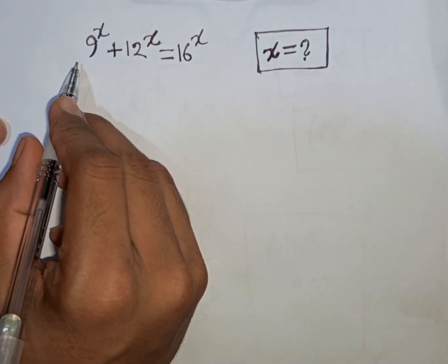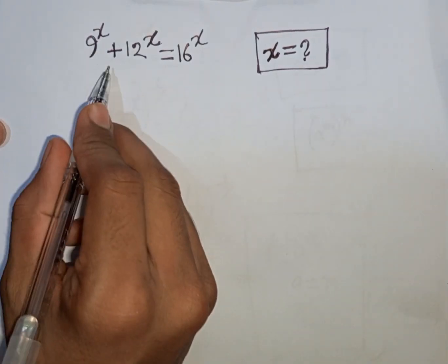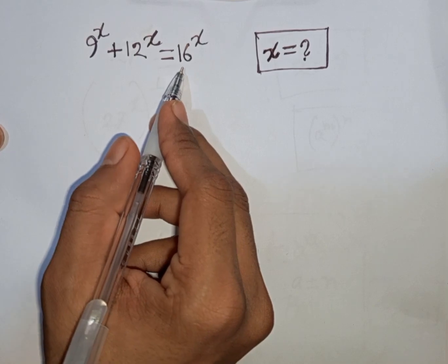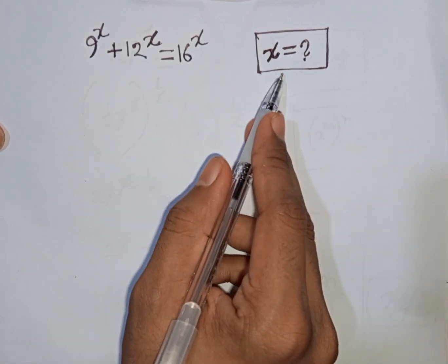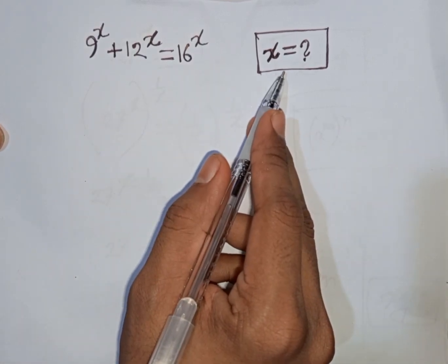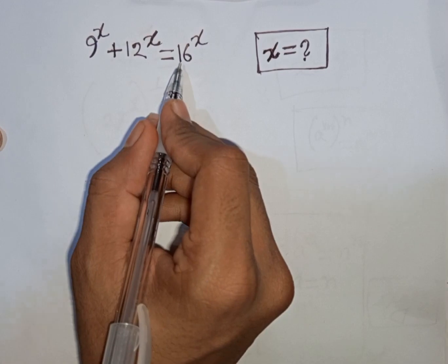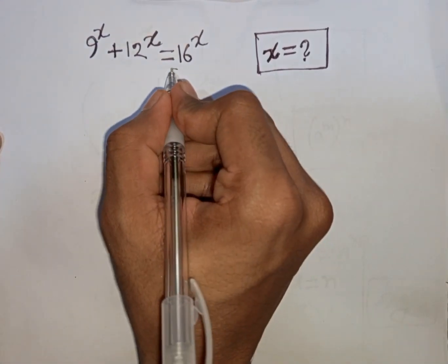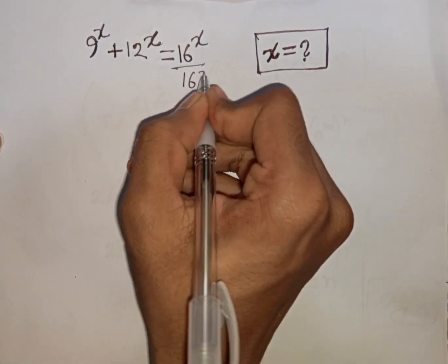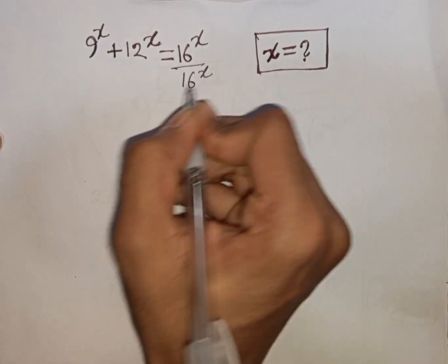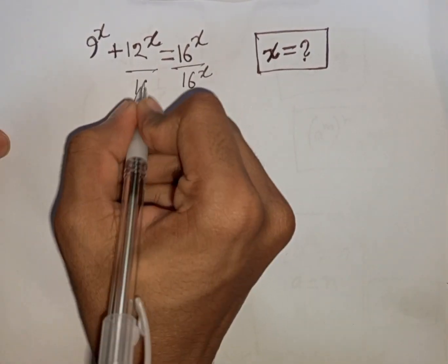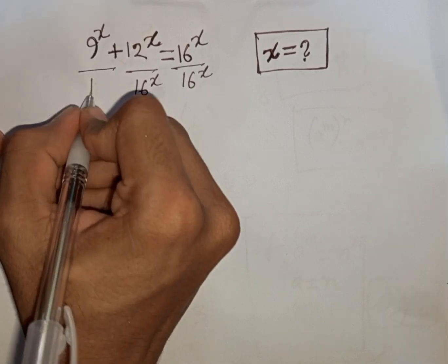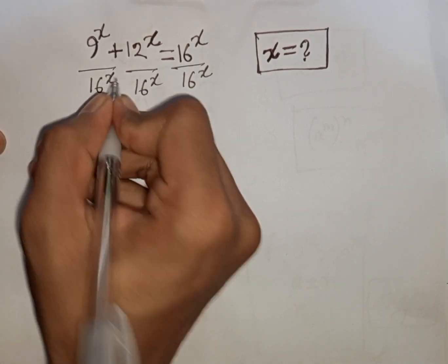How to solve 9^x + 12^x = 16^x. Find the value of x. First, we divide both sides by 16^x.